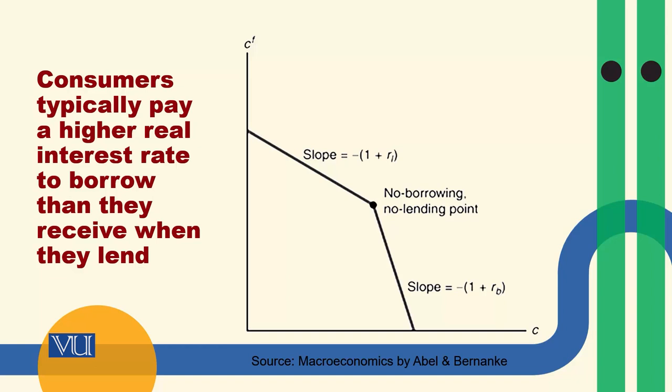So today we will discuss this scenario — the budget constraint is going to have a kink, and the kink is going to be at a point. On the vertical axis we have future consumption. If you take this point and join it with the horizontal axis, this point shows that the value is (A + y_a), where A is the wealth.